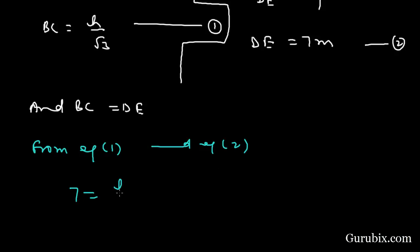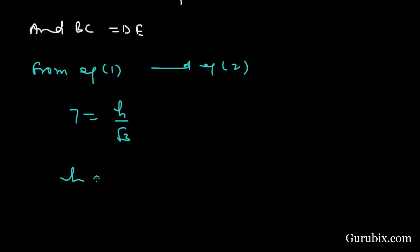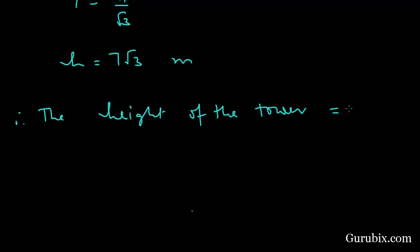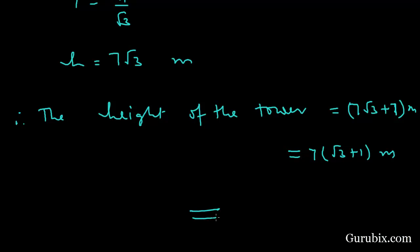From equations one and two: 7 equals h over √3, which means h equals 7√3. Therefore the total height of the tower is 7√3 plus 7 meters, which equals 7(√3 + 1) meters. This is the solution of the question. Thank you.